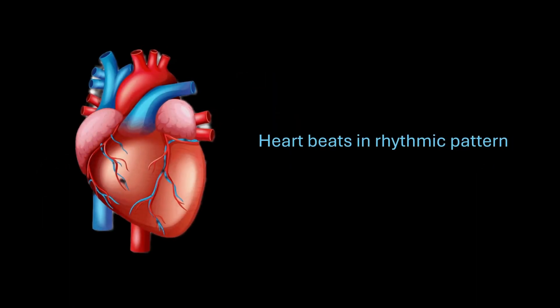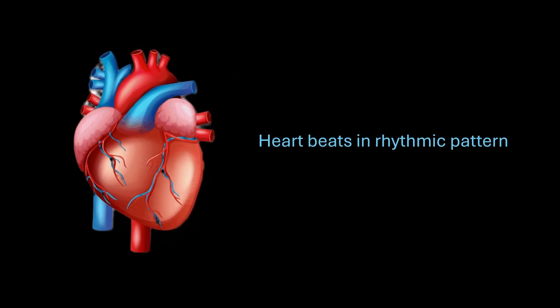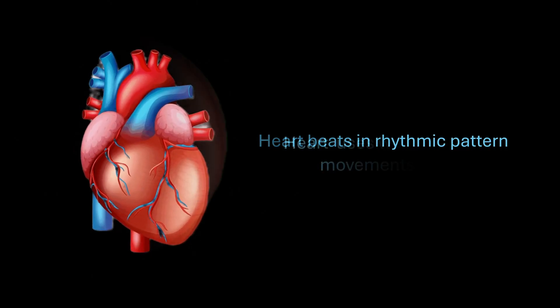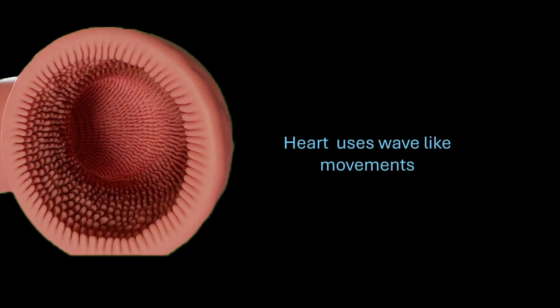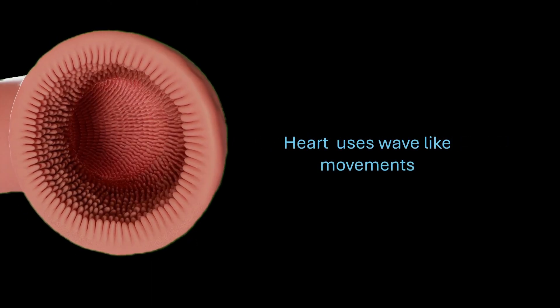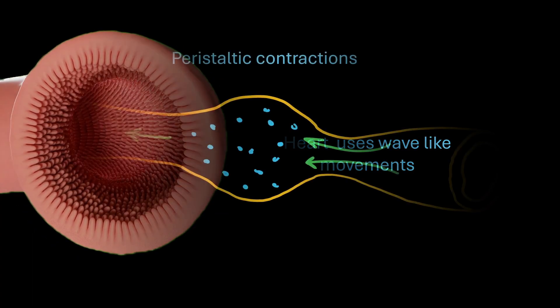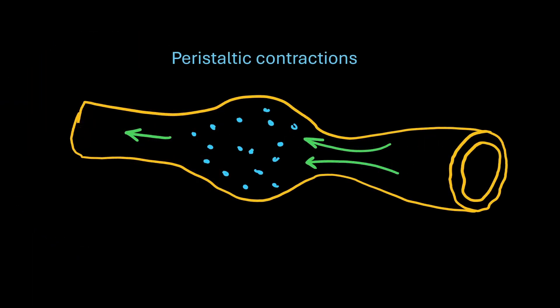Unlike the human heart that beats in a rhythmic pattern, the cockroach's heart uses wave-like movements. Such wave-like contractions are called peristaltic contractions, which are pushing the fluid as a bulge and then pushed forward.